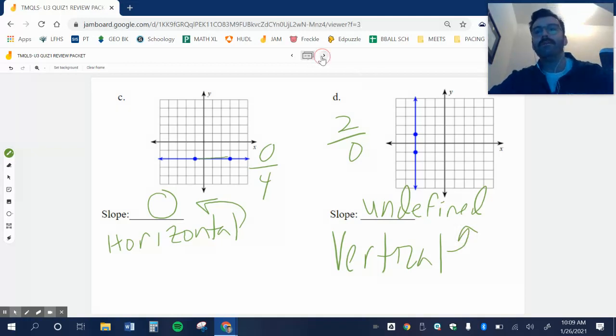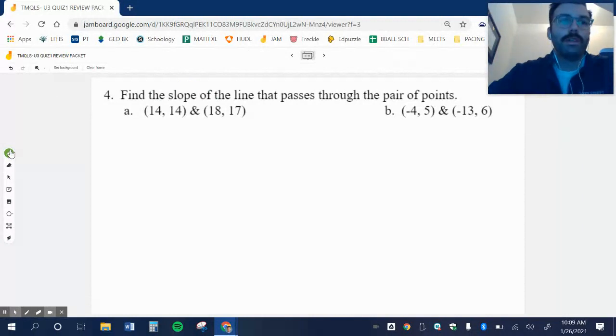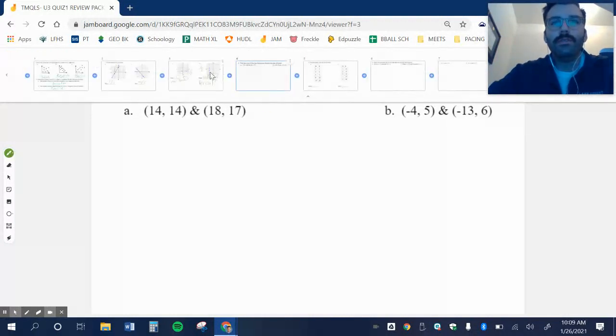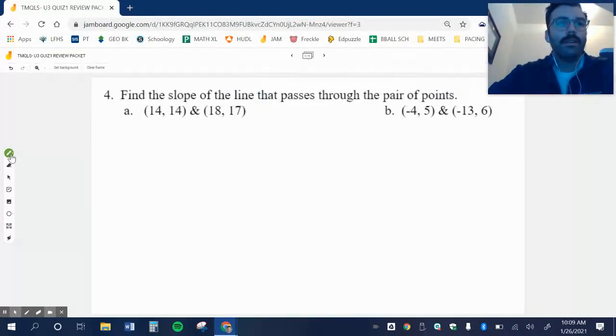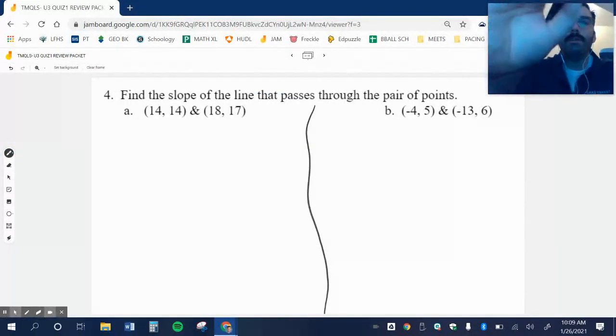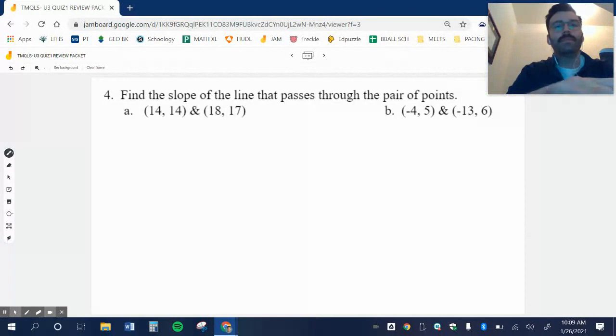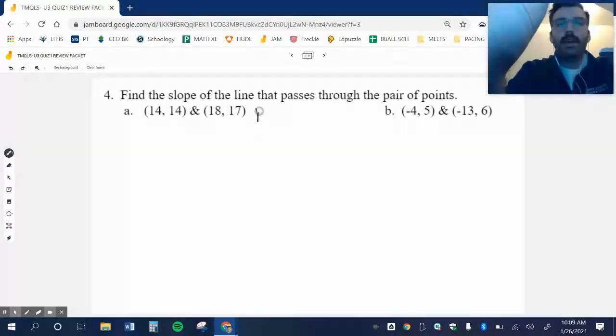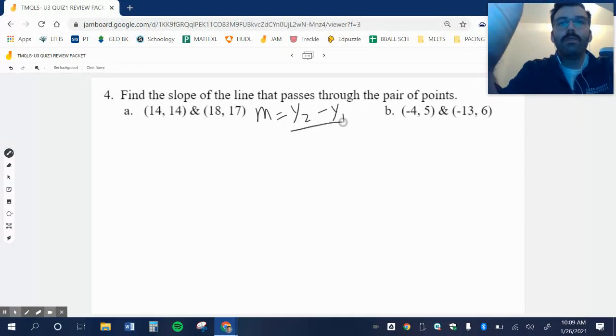Let's keep going, having fun. Find the slope that passes through the pair of points. I'll do this one or the next one. So that passes through the pair of points. Remember, you're going to need to use M equals Y2 minus Y1 over X2 minus X1 for both of these problems.